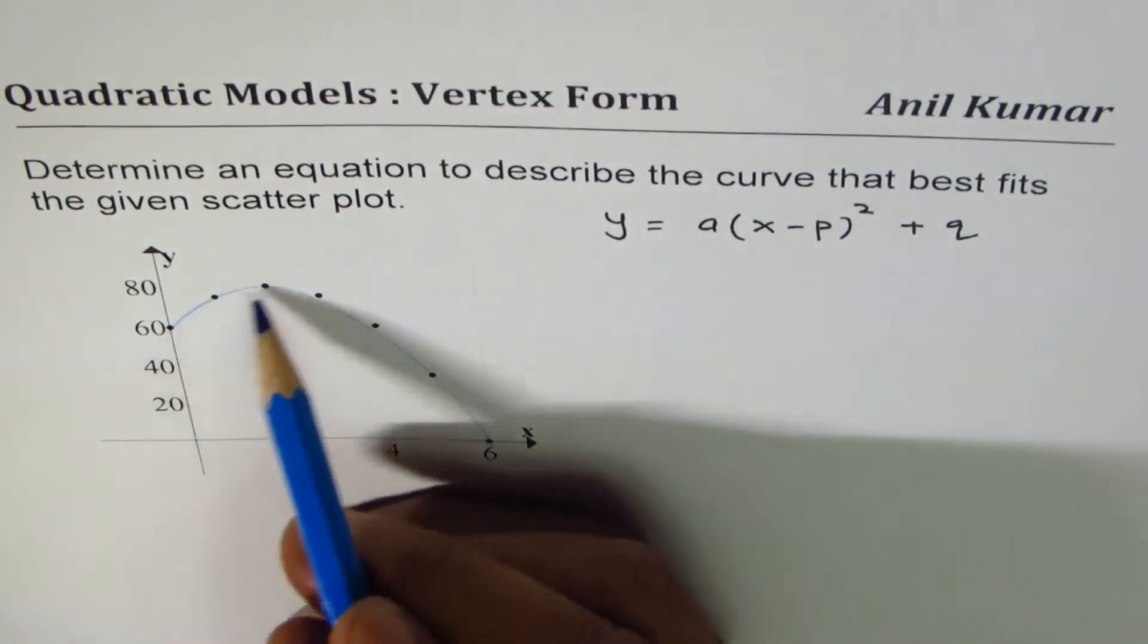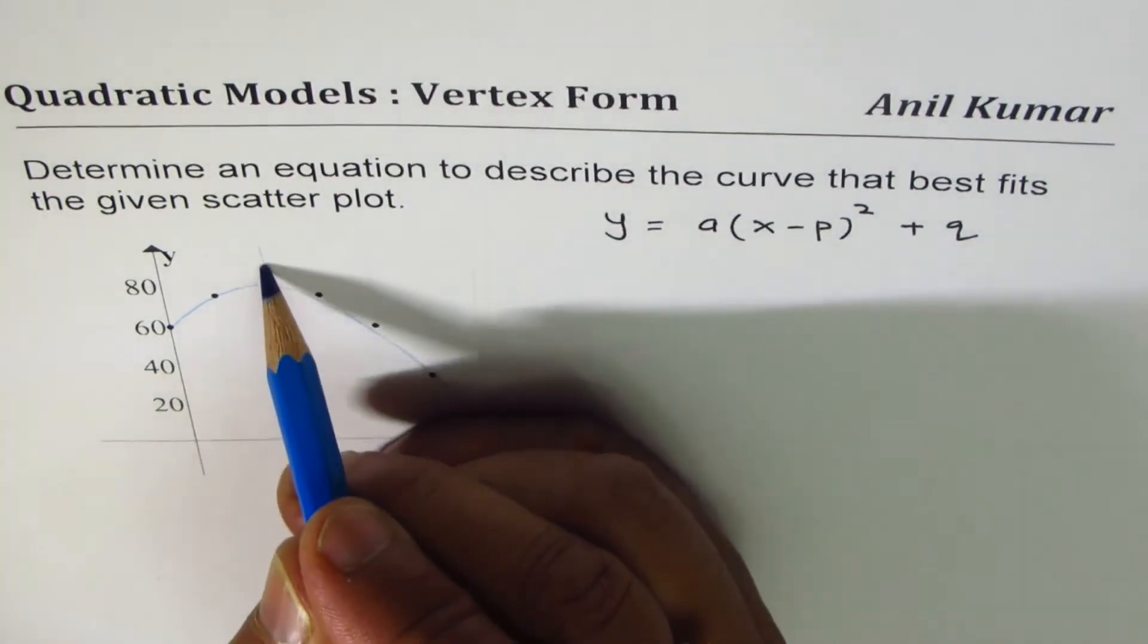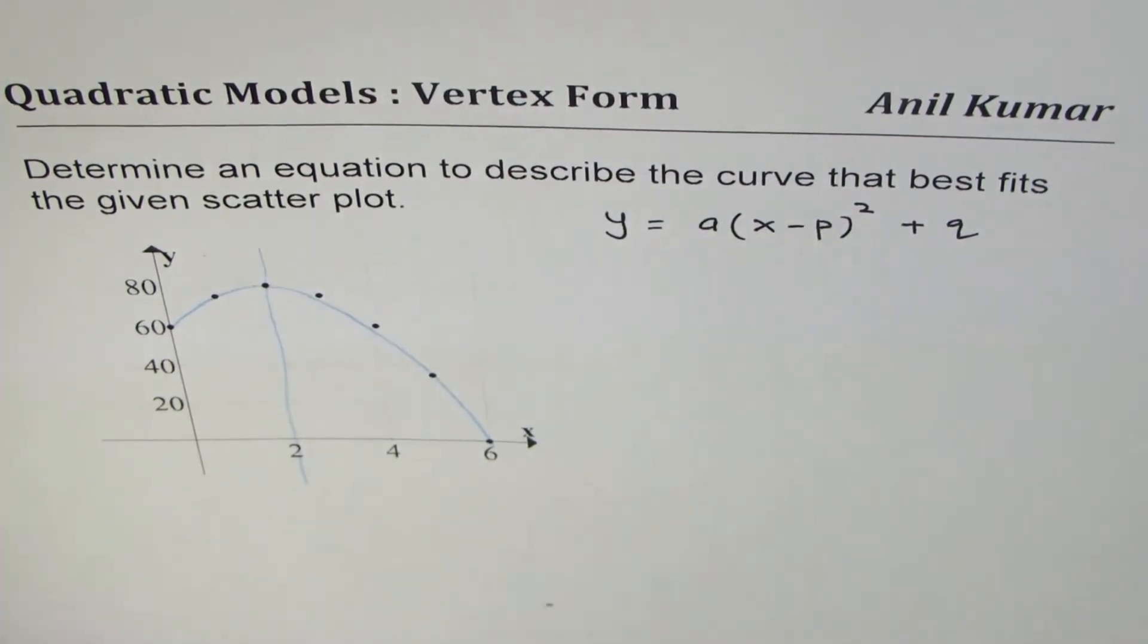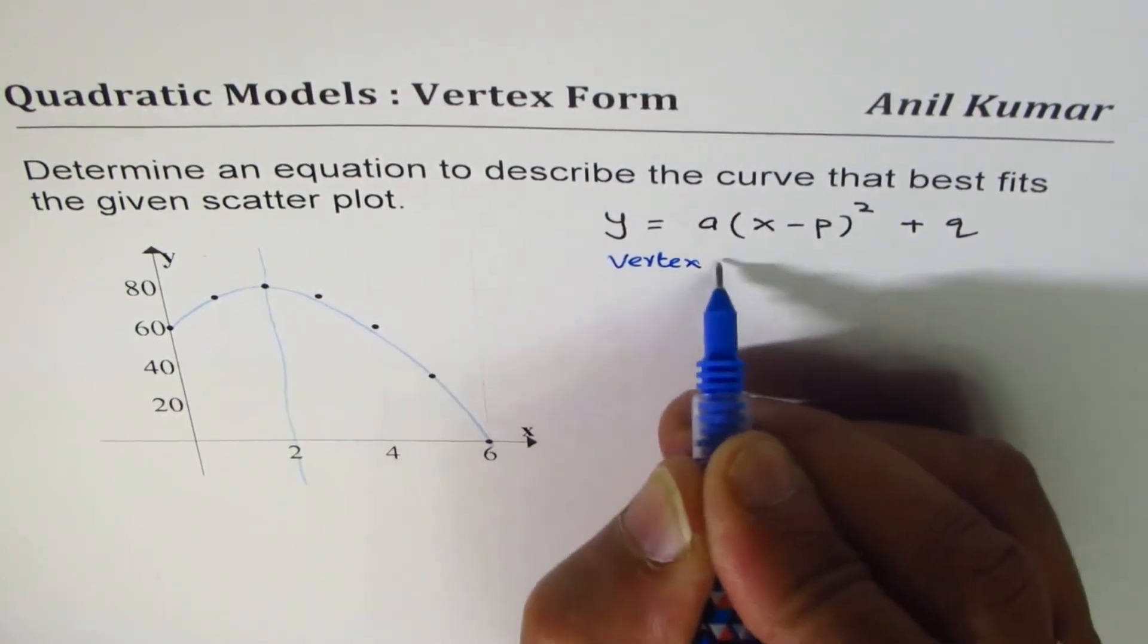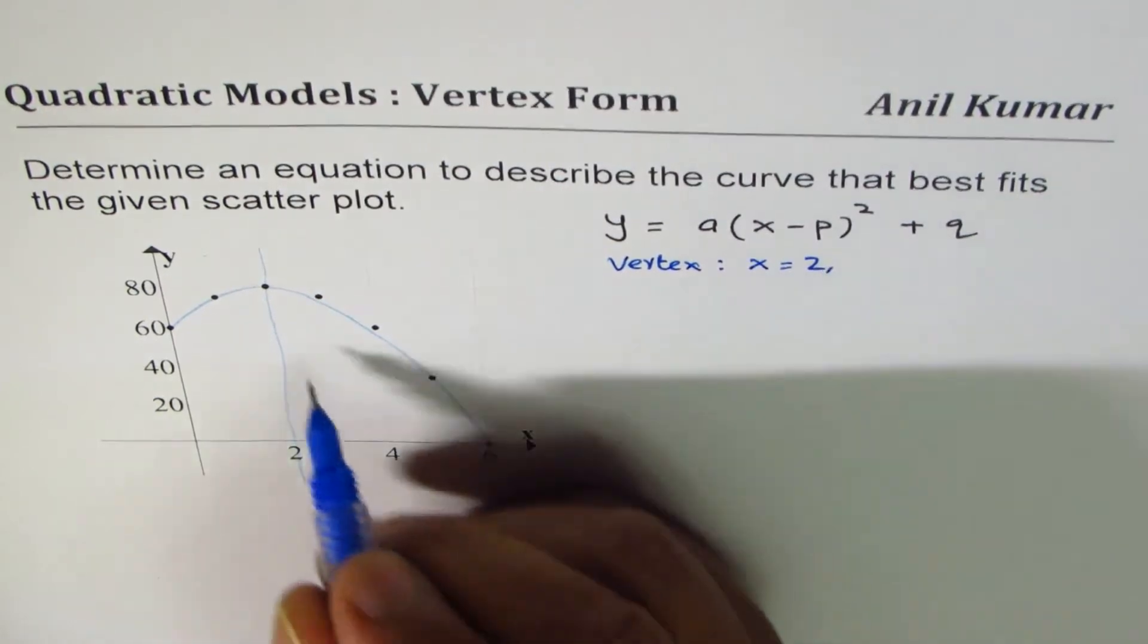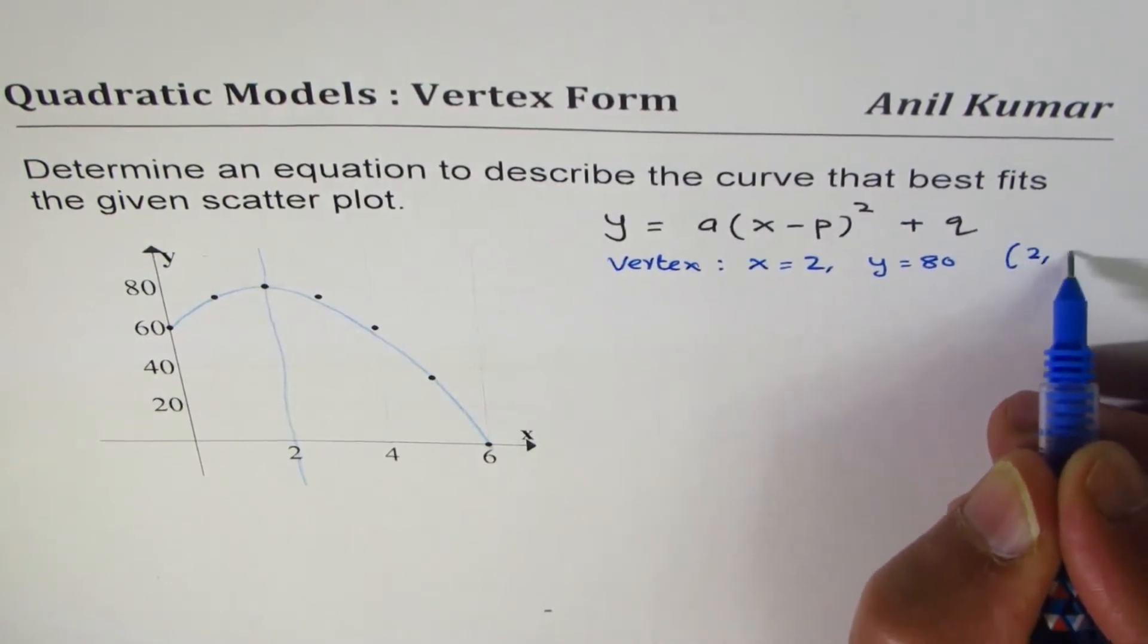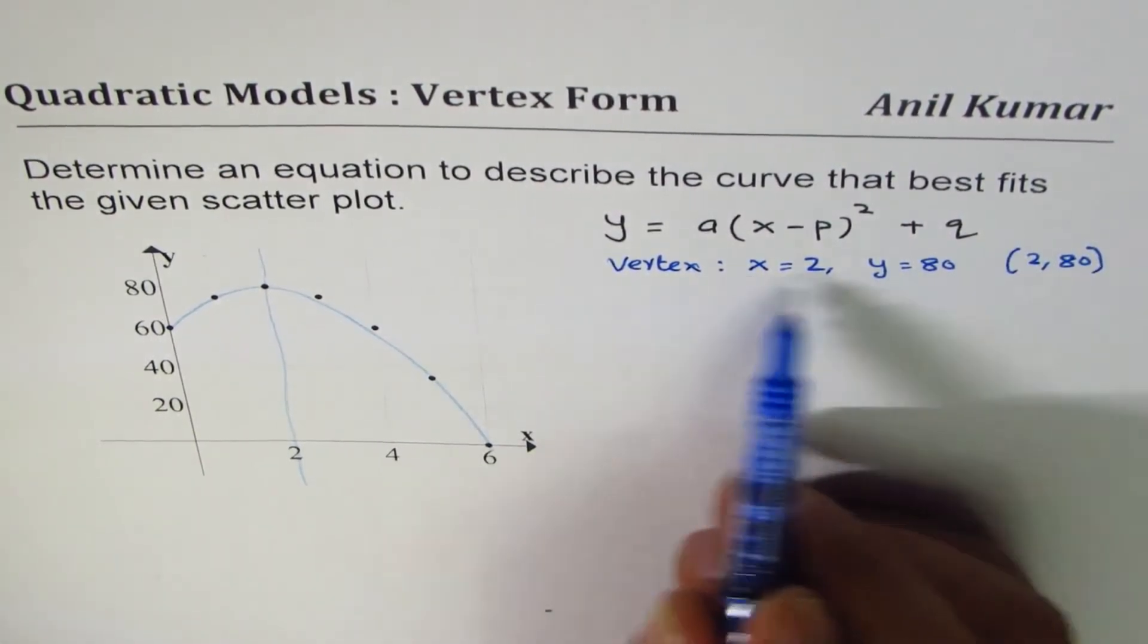So I'm just connecting it, it is kind of a parabola. In this parabola you can see clearly that the vertex is at x equals to 2. So what we observe here is that vertex is at x equals to 2 and the y value is 80, or the coordinate points could be written as (2, 80).